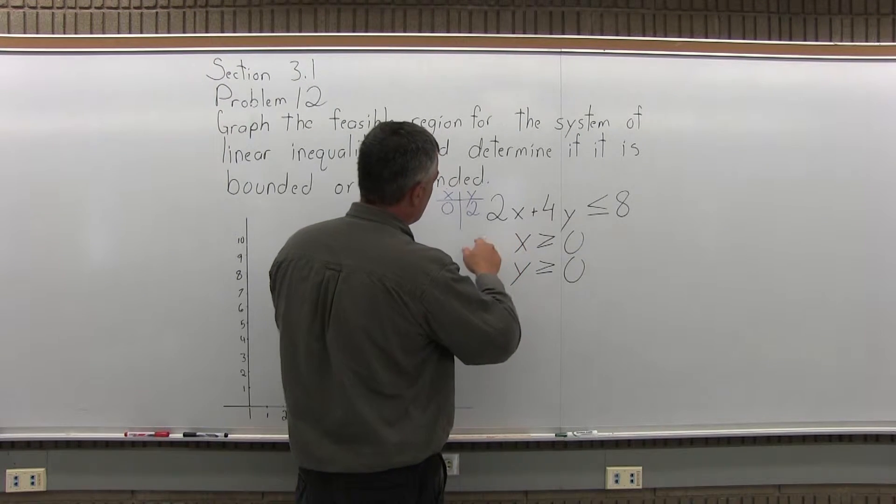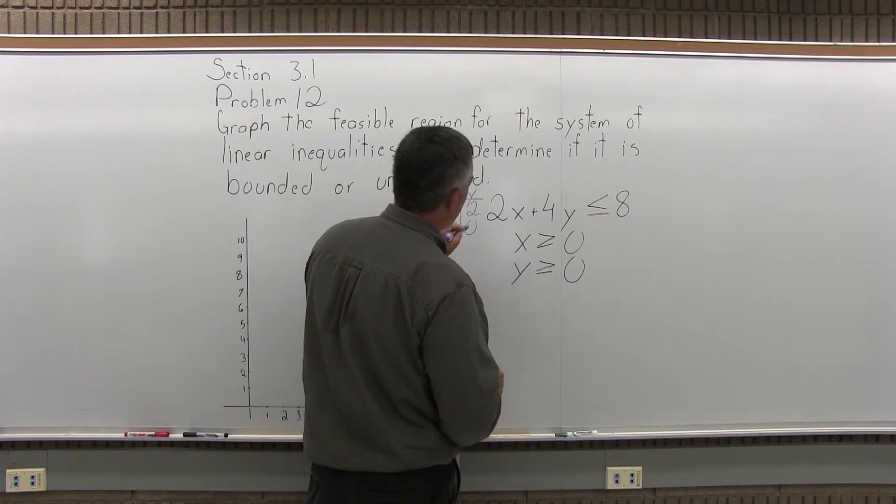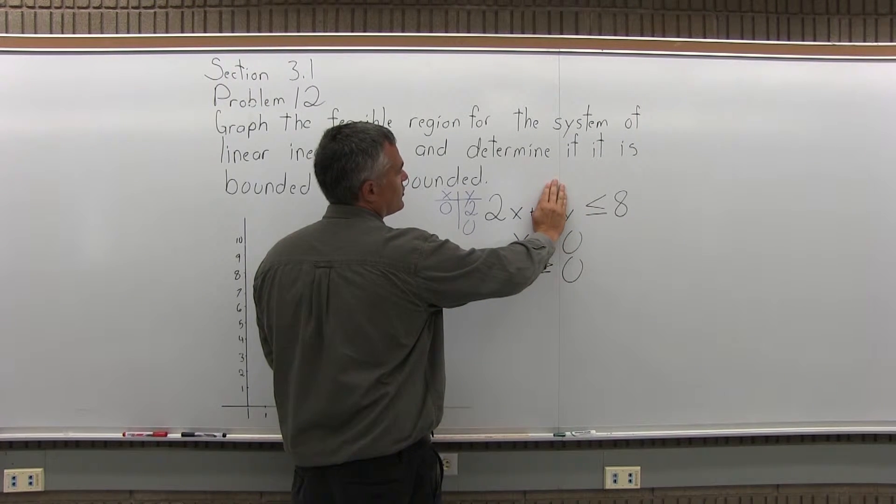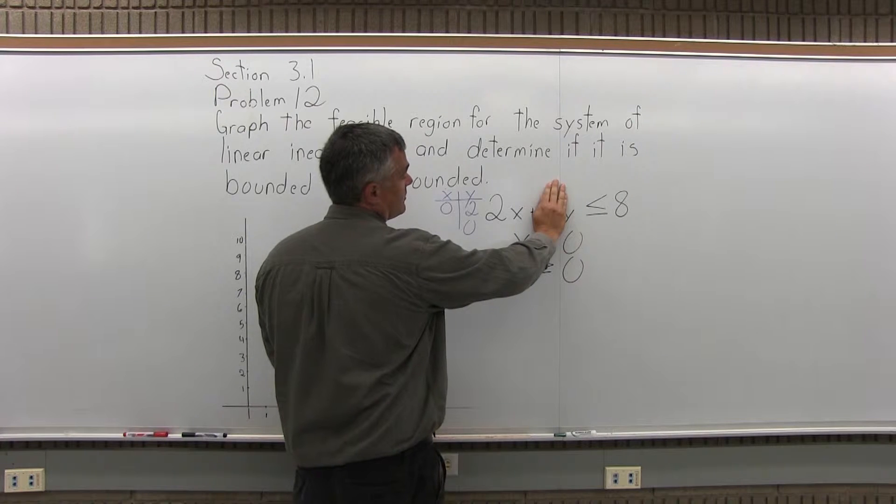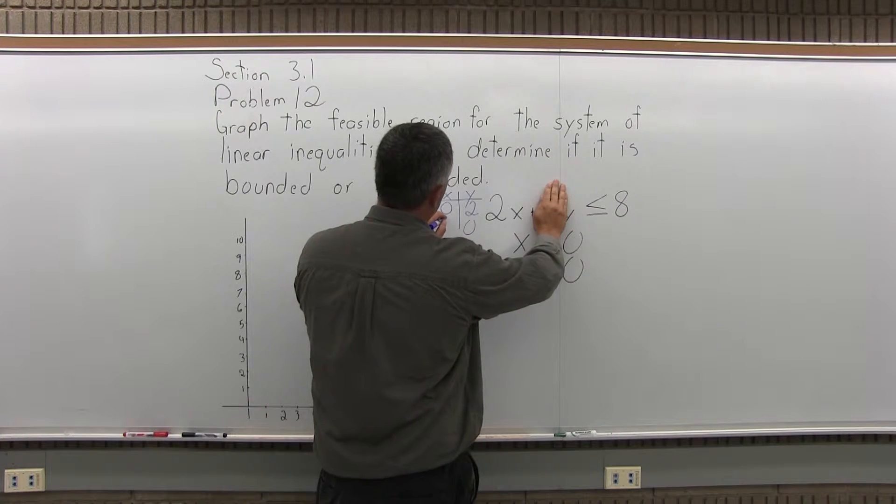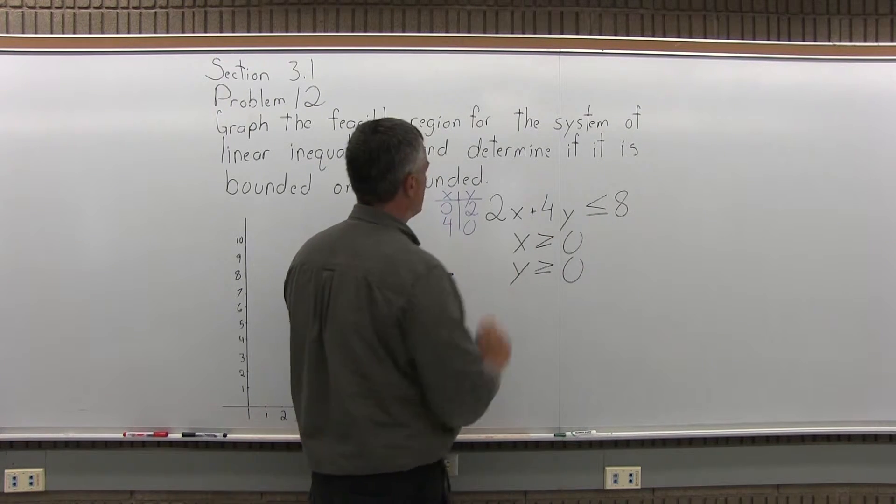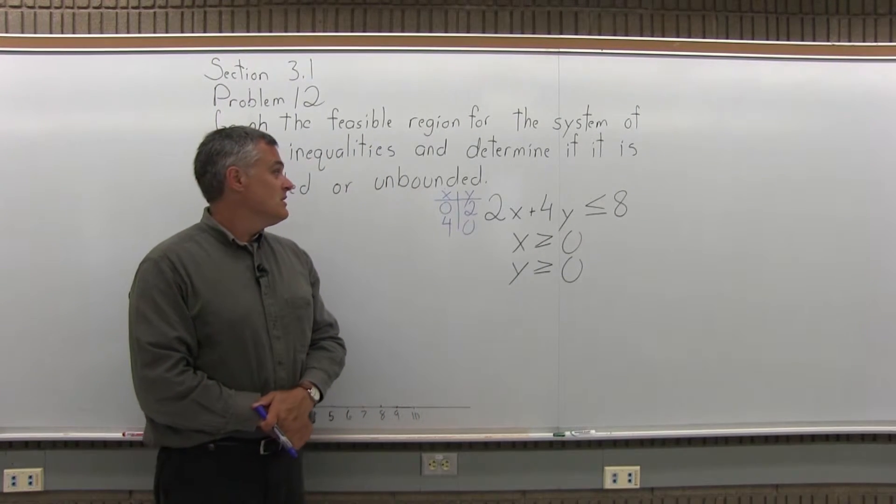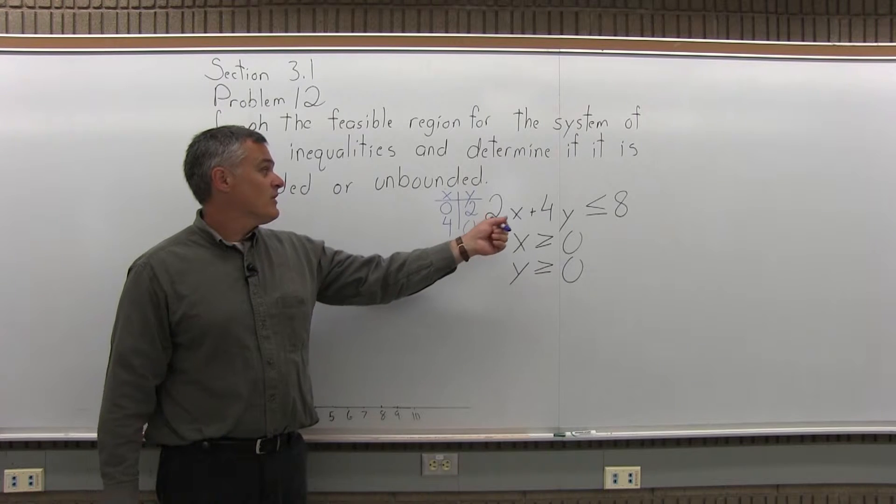Now the other one, if I zero out the y, 4 times y becomes 4 times 0, I'm left with 2x equals 8. Well, x would have to be 4. 2 times 4 would make 8 equals 8, make the equation true. So now, that's step one. I have two points that make the inequality true if I pretend it's an equation.